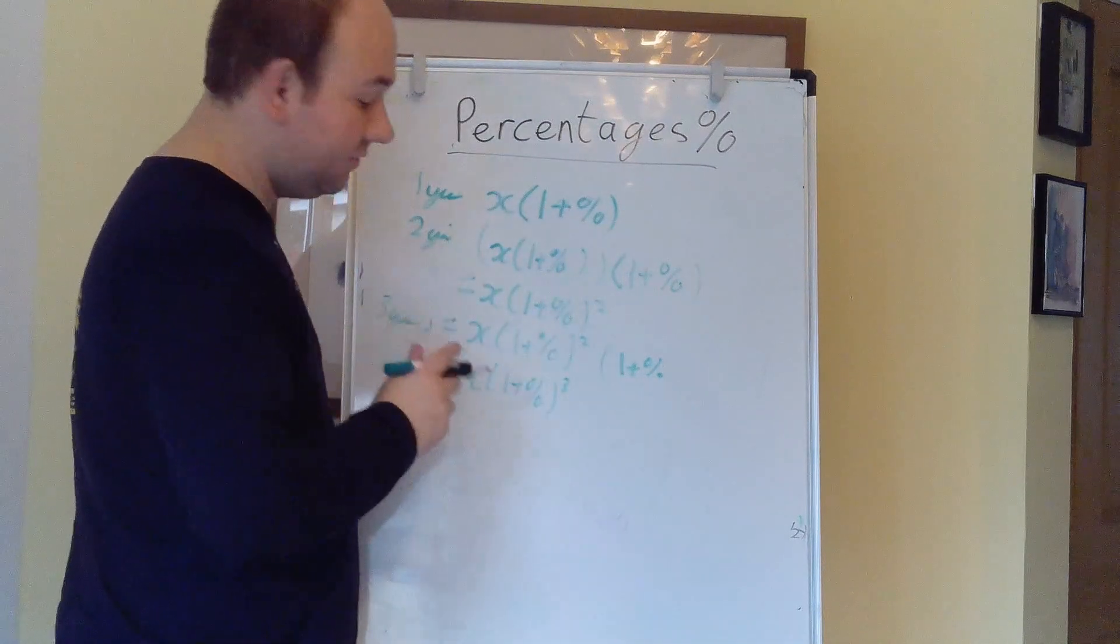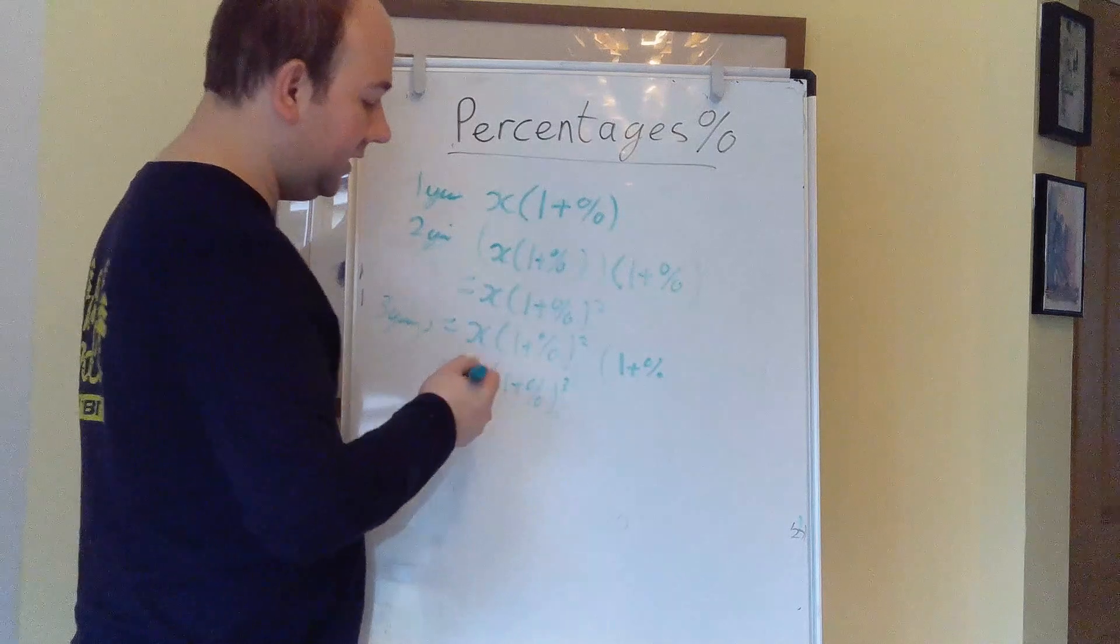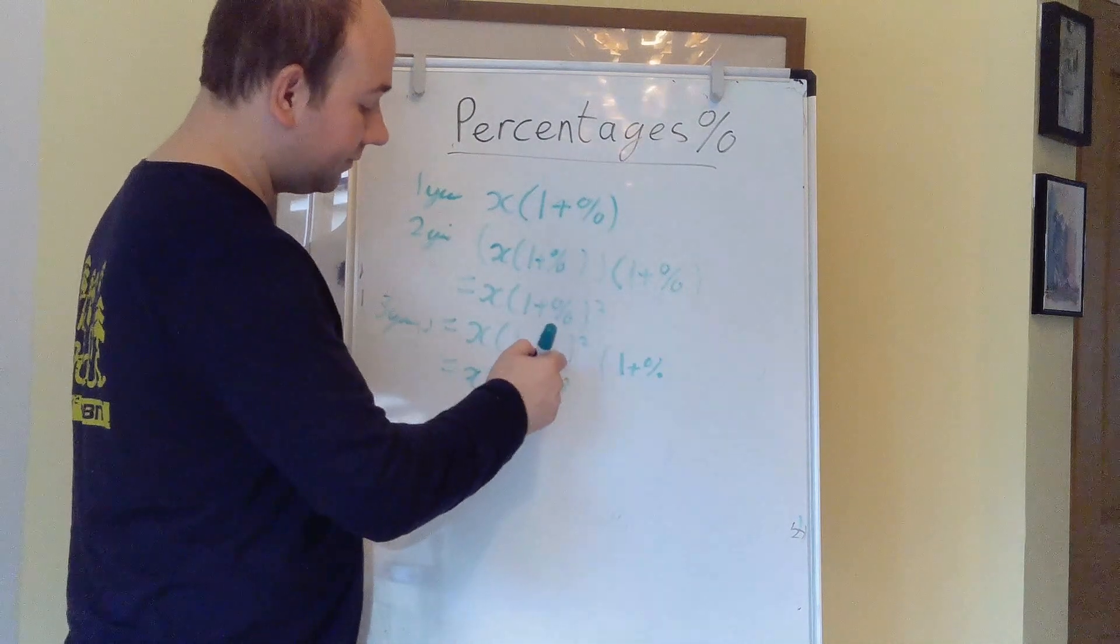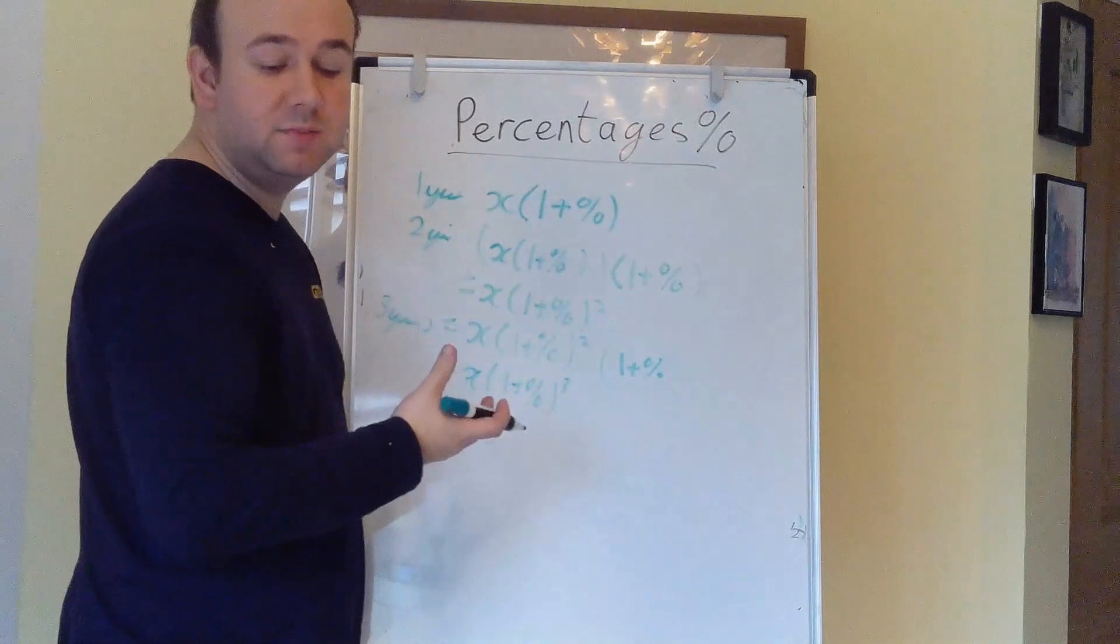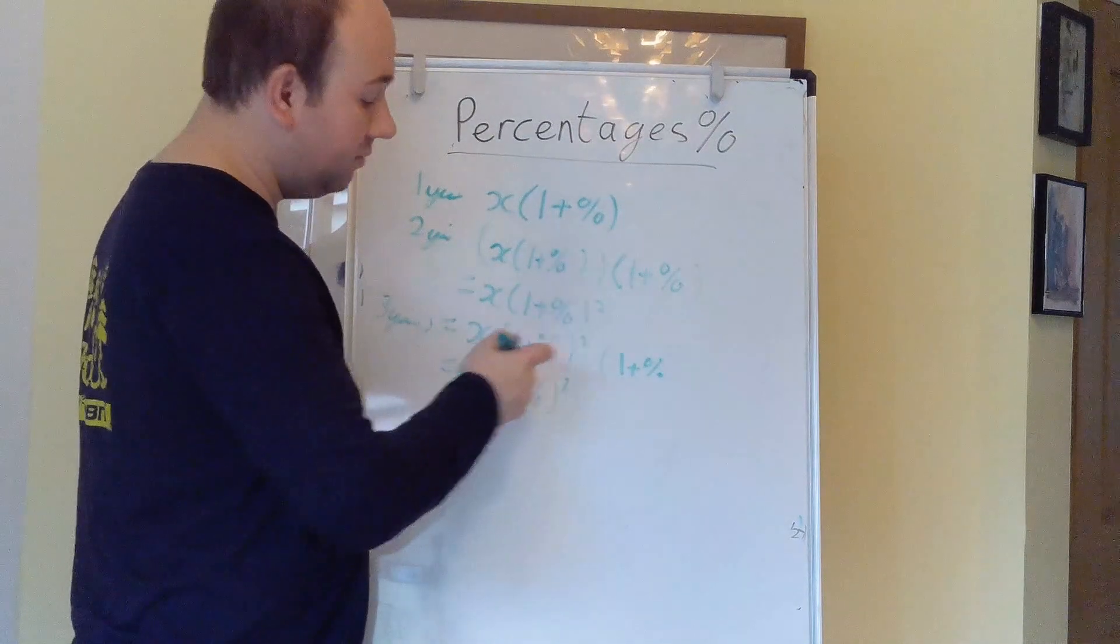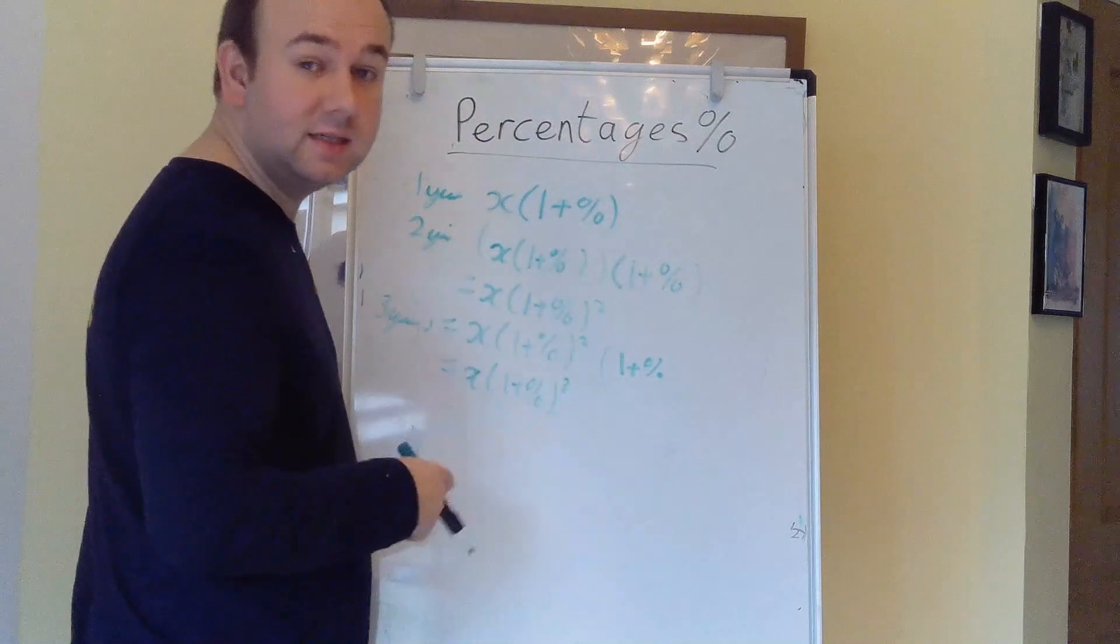There is a modification of this formula if you're getting paid multiple times per year, in which case you divide the percentage by the number of times per year you get paid it, and you multiply the power by that number.